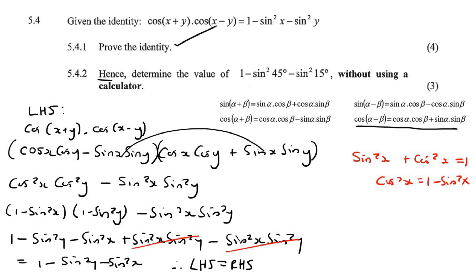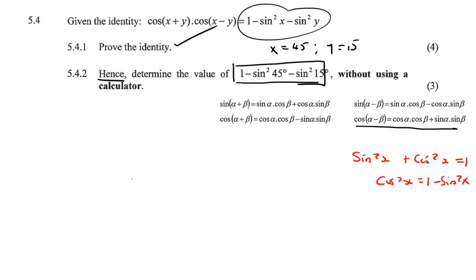Okay, so we've done that. Then it says, hence, determine the value of this. So can you see that this copies that? All that they're saying there is that x is 45 and y is 15. Can you see that then they're the same?